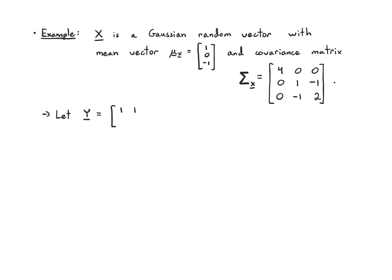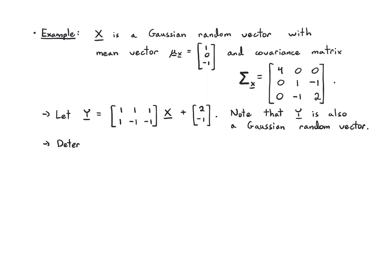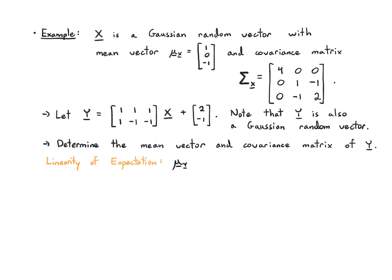Now take the linear transform y = Ax + b, where A = [[1, 1, 1], [1, −1, −1]] and b = [2, −1]. Since it is a linear transform, y is also a Gaussian random vector. The only thing to do is find its mean vector and covariance matrix. Using linearity of expectation, the mean of y is A times the mean of x plus b: [[1,1,1],[1,−1,−1]] times [1, 0, −1] plus [2, −1], which works out to [2, −1] plus [2,−1]... yielding mean vector [1, ...] — you can verify the details yourself.